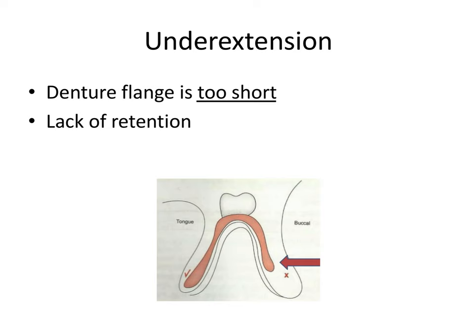Underextension is where the denture flange is too short. You'd have a lack of retention because you don't have enough surface area and the meniscus of the film layer is not protected as deep in the vestibule and is more easily disturbed. That surface tension is harder to maintain — you can disrupt the film layer more easily — and you don't have as much surface area to take advantage of, so you won't have as great retention as you could.